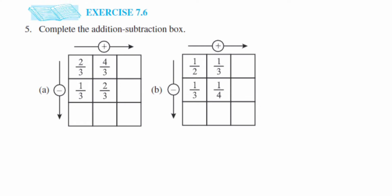Here's question 5 from exercise 7.6, from the fraction chapter of Class X. The question says: complete the addition-subtraction box. There are two boxes given. Going towards the right side we have to do addition, and going downwards we have to do subtraction. We'll solve addition first and then subtraction.